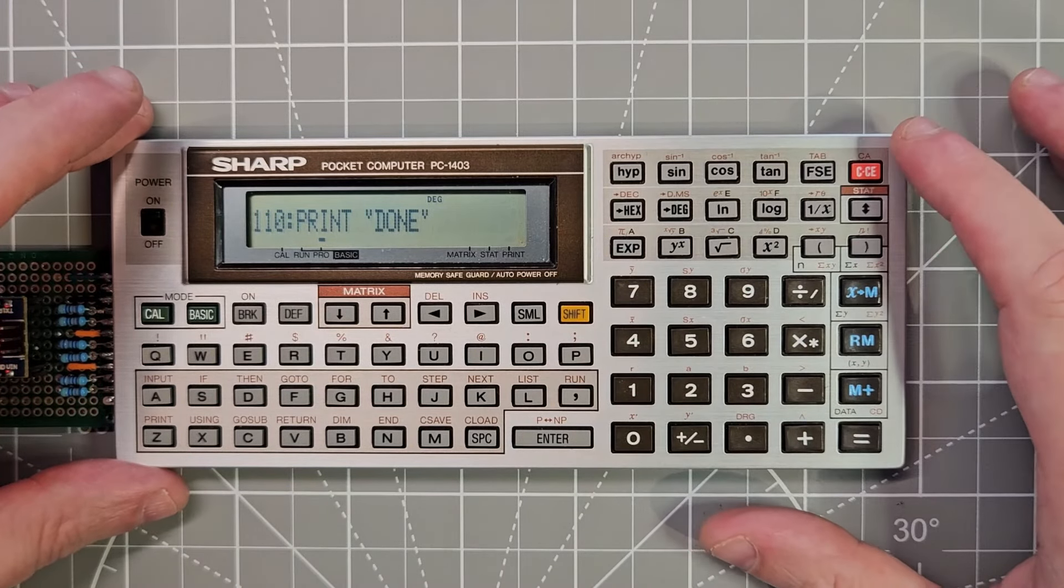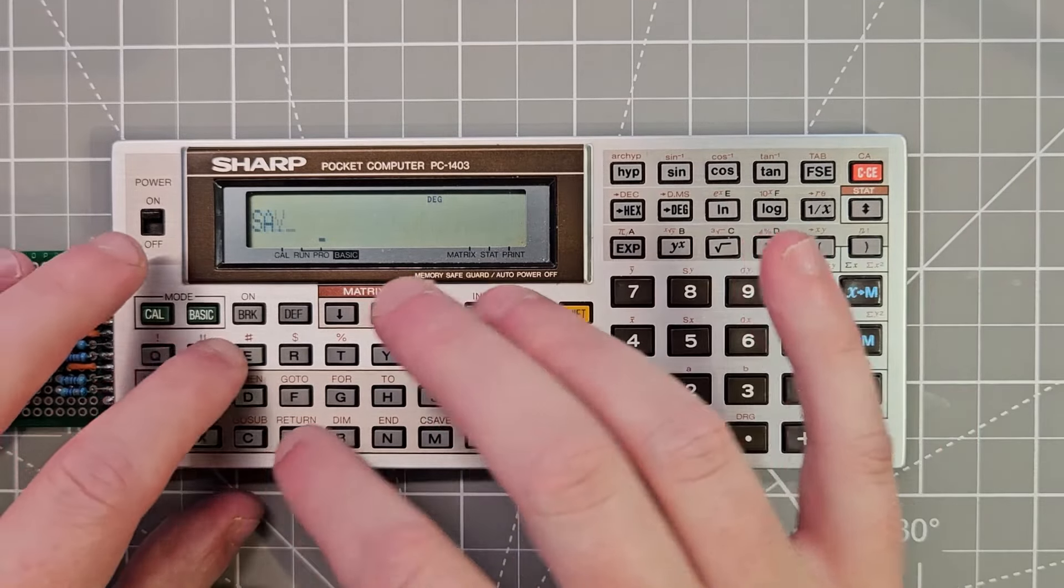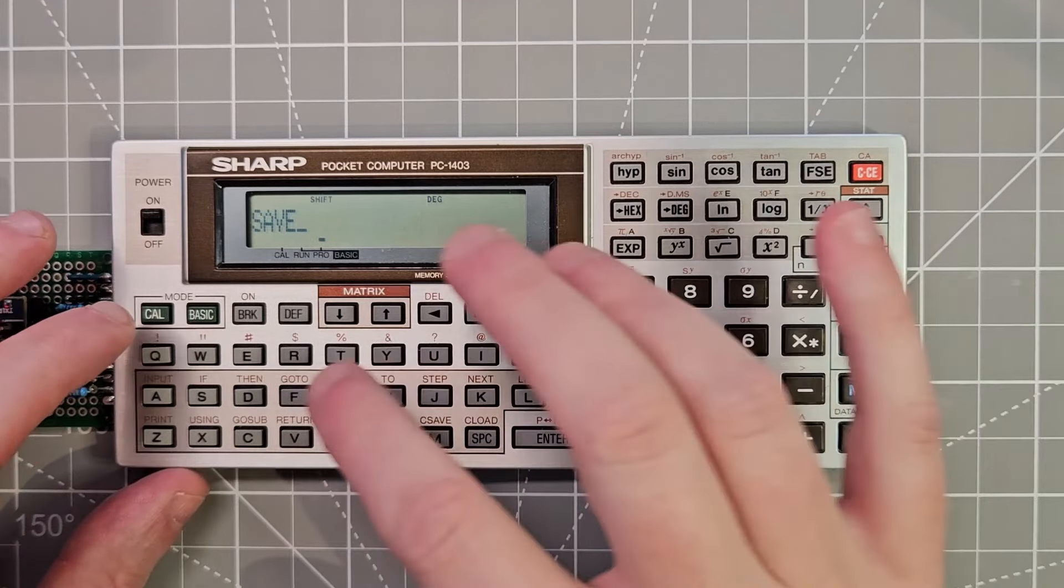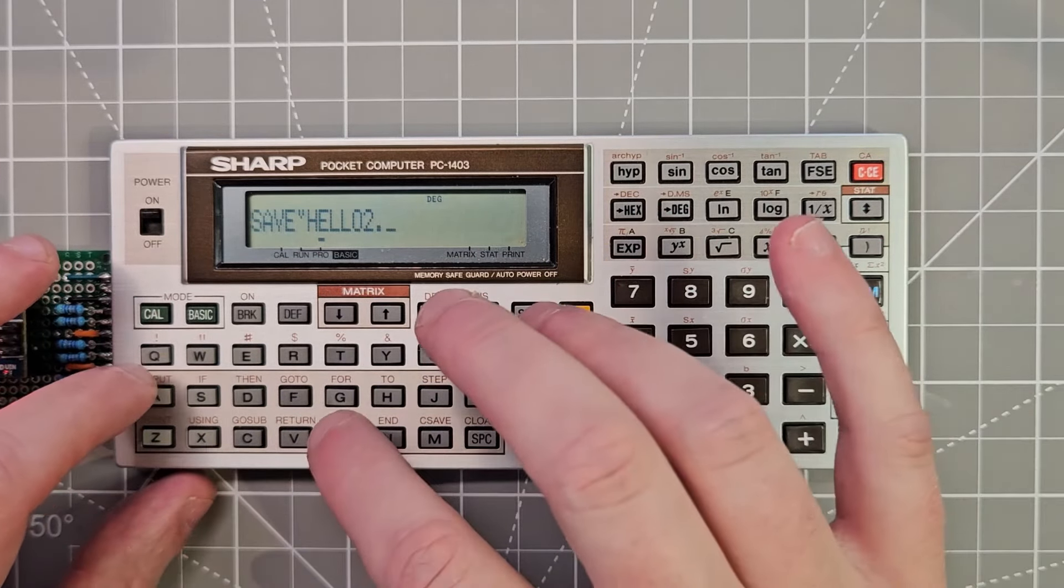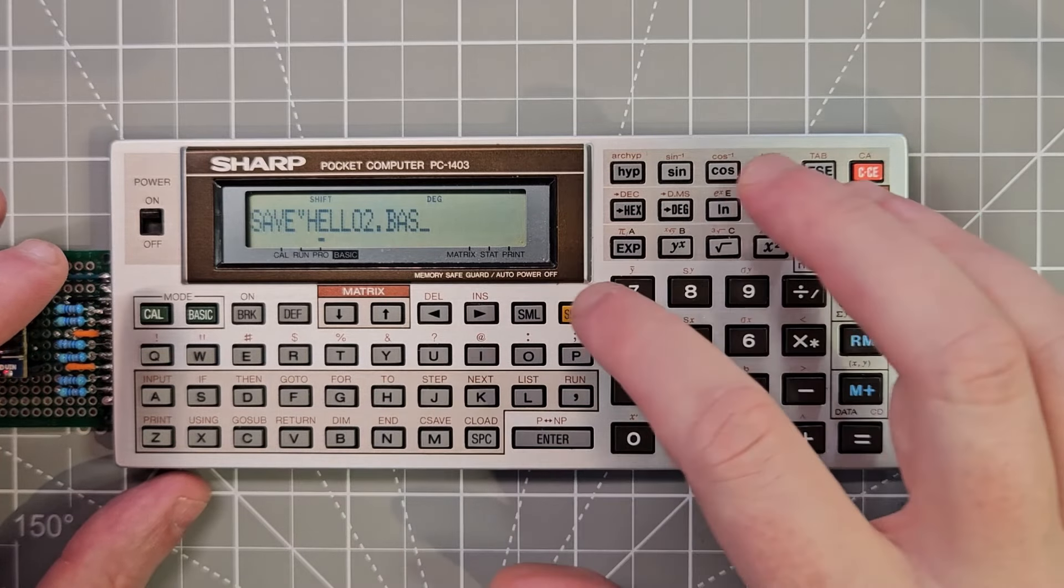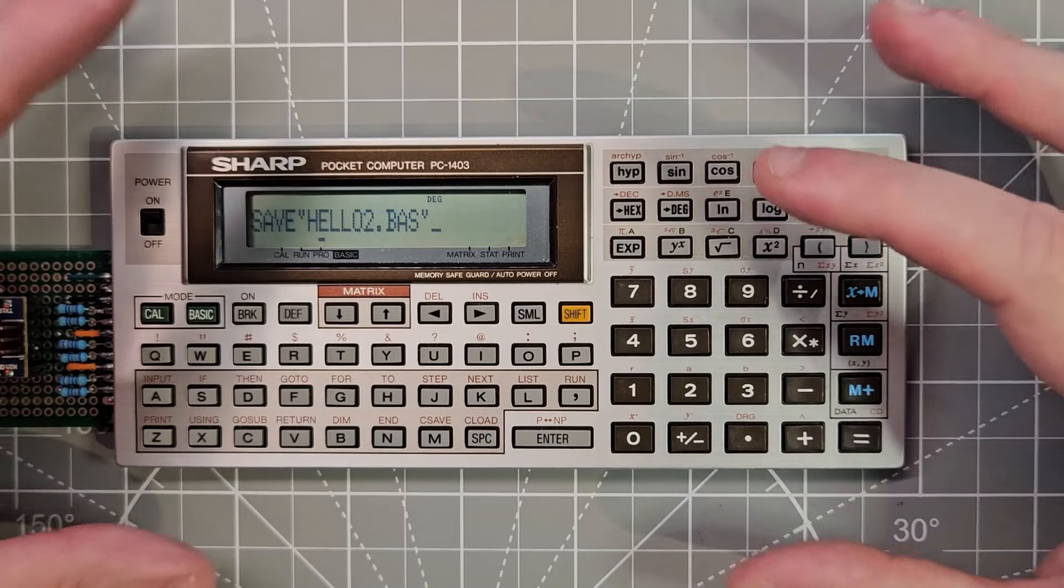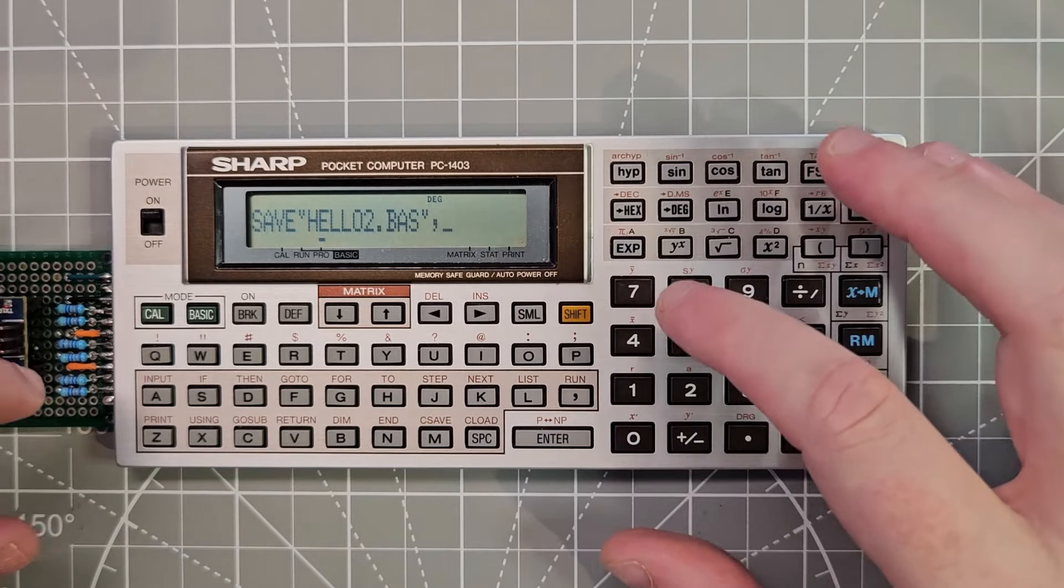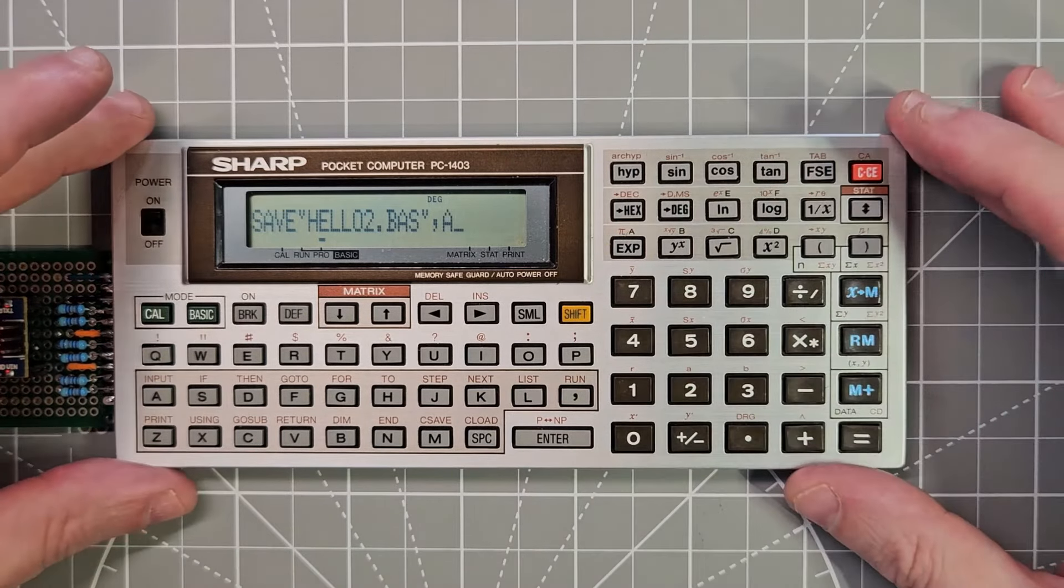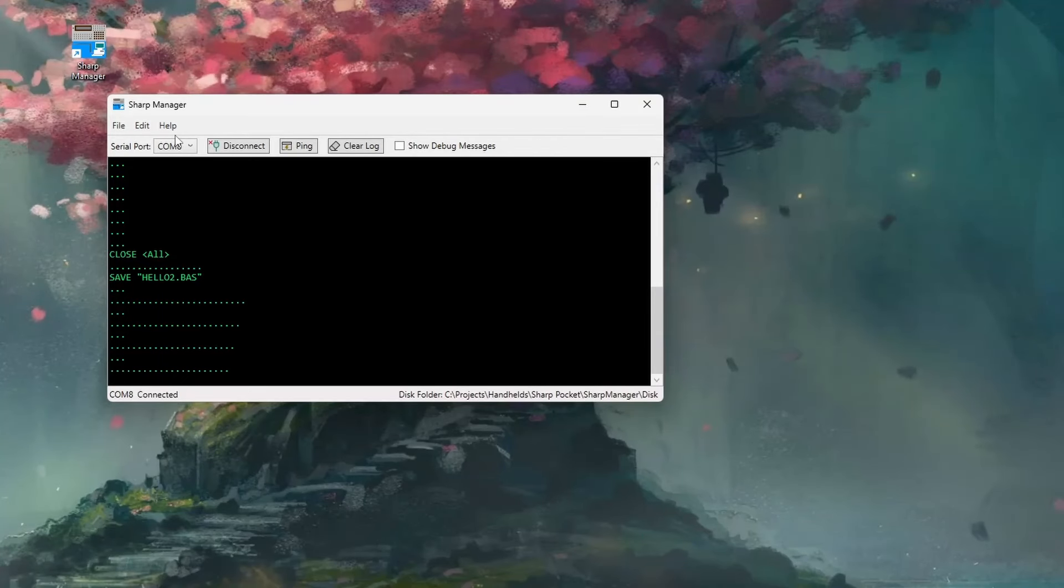So let's save it as a new file. So I'm going to save this as hello two dot BAS. And what we'll do is we want it as a ASCII file. So if I save it like this, it'll save it in this tokenized format, which is faster to load and save. But if we do a comma A at the end, it will save it as an ASCII file and we can open it up as a text file on the computer. So I'll hit that and it's going to save the file.